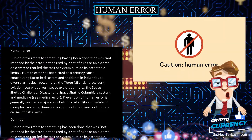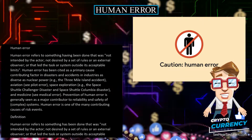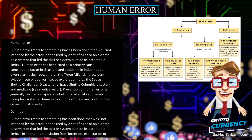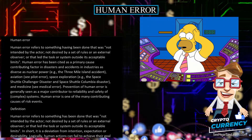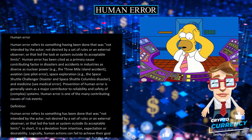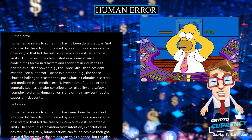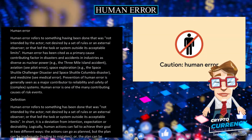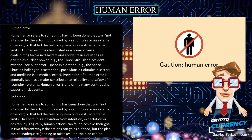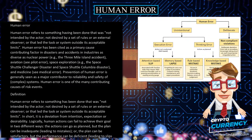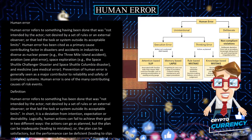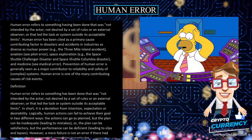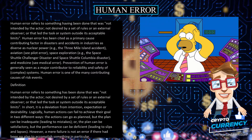Industries affected include nuclear power — for example, the Three Mile Island accident — aviation, pilot error, space exploration — for example, the Space Shuttle Challenger disaster and Space Shuttle Columbia disaster — and medicine. Prevention of human error is generally seen as a major contributor to the reliability and safety of complex systems.